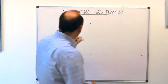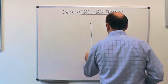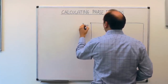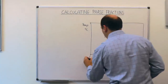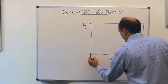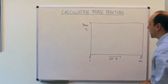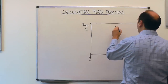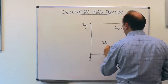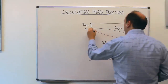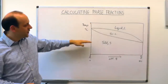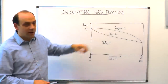Let's take a phase diagram. We'll have a temperature axis and a composition axis — temperature in degrees C, and we'll go from A to B in atom fraction B from 0% to 100%. We'll have a liquid phase up here, a solid phase down here, and in between a solid plus liquid region. So we've got a liquid phase with complete solubility at high temperatures, a solid phase with complete solubility at low temperatures, and a two-phase region in the middle.